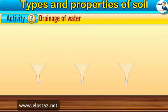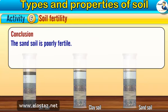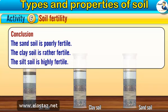Activity 6: Soil Fertility. Take three graduated cylinders with a wide opening. Fill one with sand soil, the second with clay soil, and the third with silt soil — fill each just to the middle. Fill each cylinder with water, cover it tightly, shake strongly, then leave it on a table for 15 minutes. Observation: Sand soil has a little amount of humus. Clay soil has a reasonable amount of humus. Silt soil has a great amount of humus. Conclusion: Sand soil is poorly fertile. Clay soil is rather fertile. Silt soil is highly fertile.